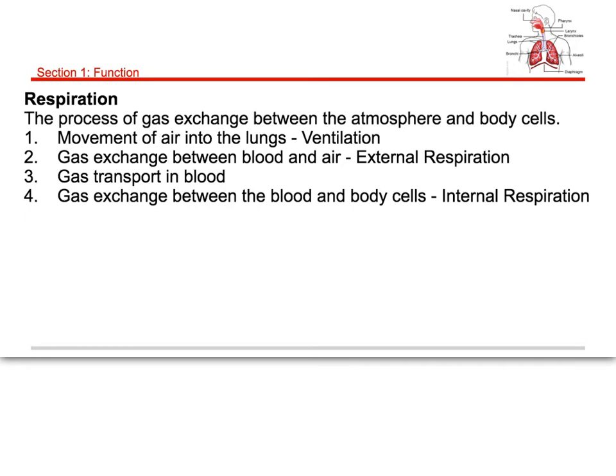From there, we have a process of gas exchange between our blood and the air, called external respiration. Once we have what we need in our blood, those gases are transported in the blood to all of our cells and tissues. When the blood reaches those tissues in step three, we have a gas exchange between blood and body cells — called internal respiration. So the process is: ventilate air in, exchange it in the lungs via external respiration, transport it in the blood, then internal respiration exchanges gas between blood and body cells.